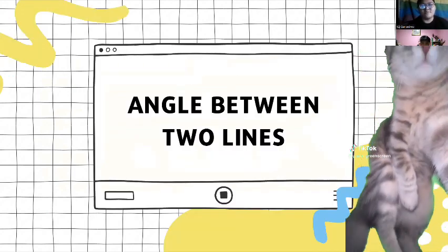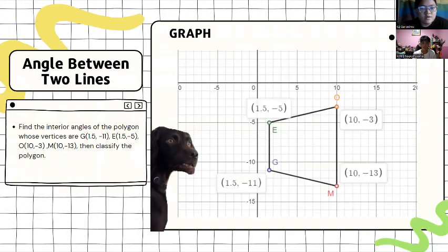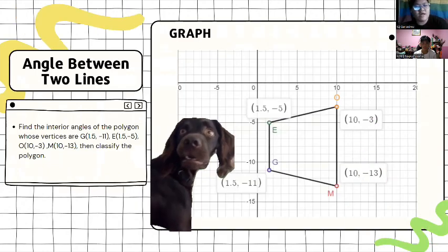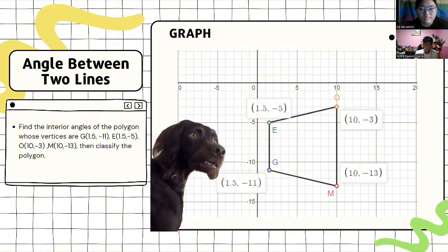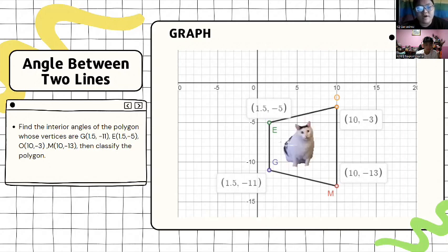Now, for the angles between two lines, for our problem, we have to find the interior angles of the polygon whose vertices are G (1.5, -11), E (1.5, -5), O (10, -3), M (10, -30), and then classify the polygon.